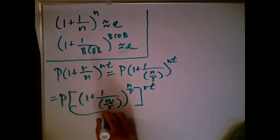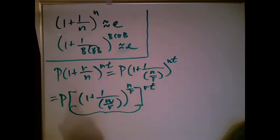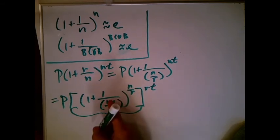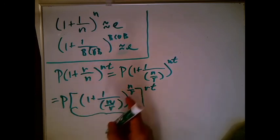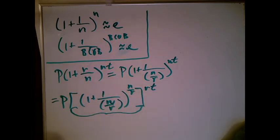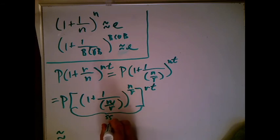This thing in the square brackets, as long as N is huge, N over R is huge. So the blob here is huge. So what I have is one plus one over blob to the blob for a huge blob. Well, that says the thing inside the square brackets is getting very close to E, right? So let's write down getting close to E.